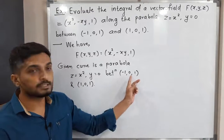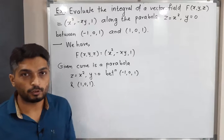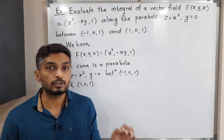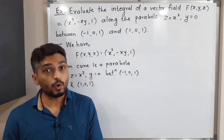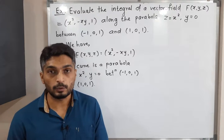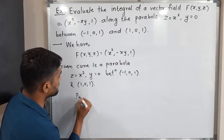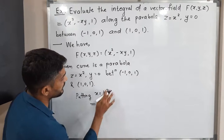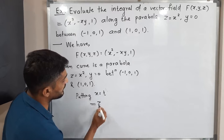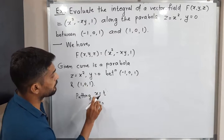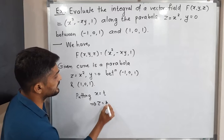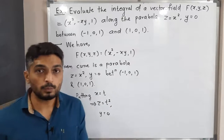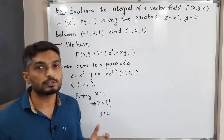It is a part of a parabola from the point (-1, 0, 1) to the point (1, 0, 1). To find the parametrization we need to convert everything into one variable. For that, put x = t. Then z = x² becomes z = t², and y = 0 is already given. So we have expressed x and z in terms of t, and y is the constant zero.